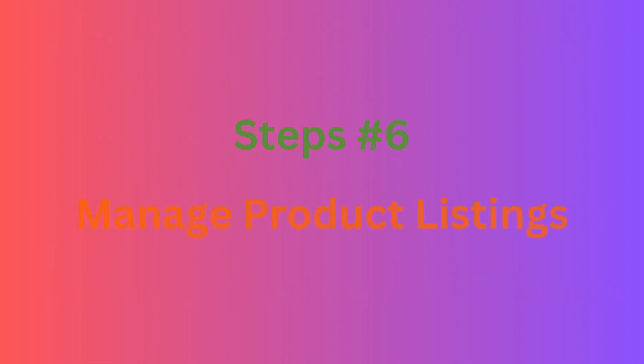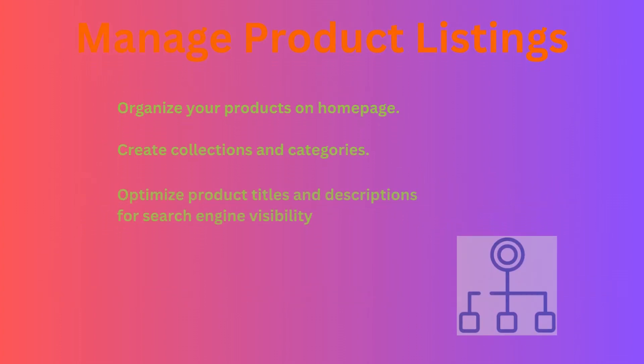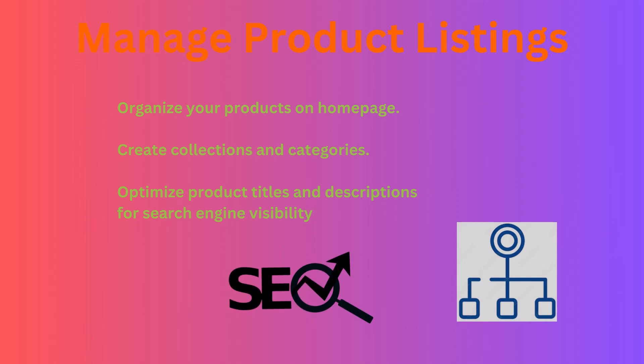Step 6: Manage product listings. Organize your products into collections or categories on your Shopify store. Optimize product titles and descriptions for search engine visibility and customer appeal.